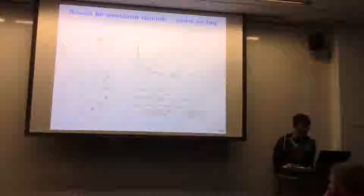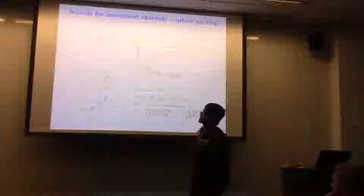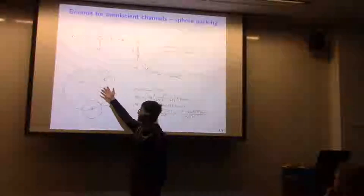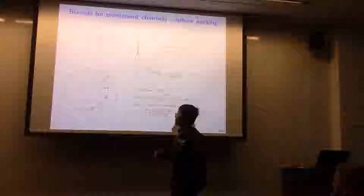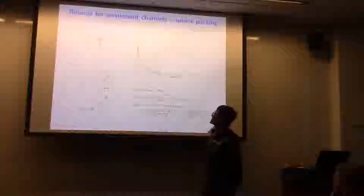Let's look at different variants of this model. If there's no noise to James — James knows exactly what X is — this is the omniscient channel. If you think about it, every codeword has to lie within a ball of radius square root nP, and the decoding balls around each codeword of radius square root nN must be disjoint to ensure no misdecoding. This is just sphere packing, which we don't understand. The best lower bound on the rate is given by the GV bound (due to Blichfeldt), and the best upper bound is given by Kabatiansky and Levenstein using the linear programming bound.